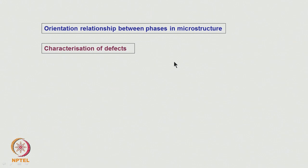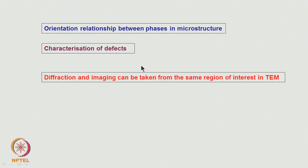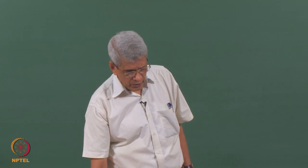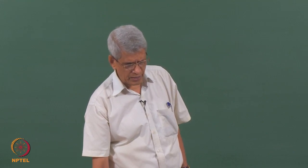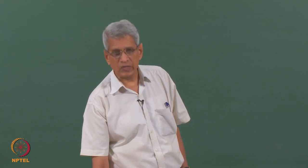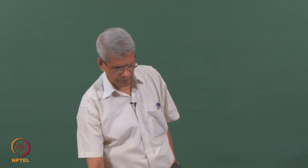Not only must we obtain and index the diffraction pattern, but if we want to use it to get useful information we must also know how to get the correct diffraction pattern — that is very important. Another most important aspect of an electron microscope is that from the same region of the sample we can get both diffraction and imaging, which is why we are able to get information about orientation relationships and characterization of defects.